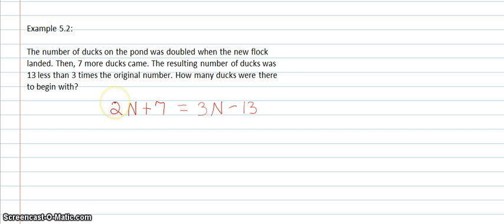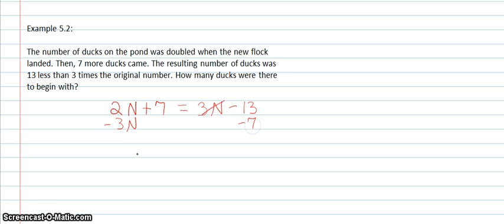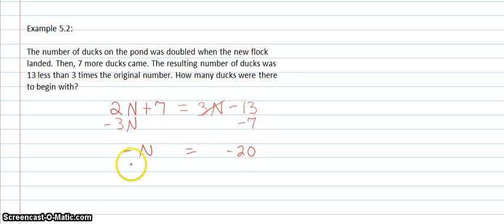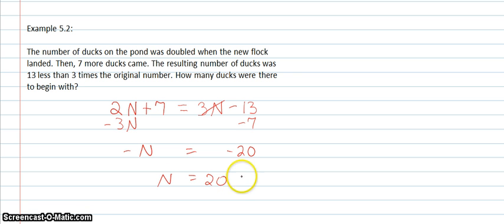Now we solve for the original number of ducks. We subtract 3n and subtract 7 from both sides, giving negative n equals negative 20. Since the opposite of n equals negative 20, n will be positive 20 — so there were 20 ducks.